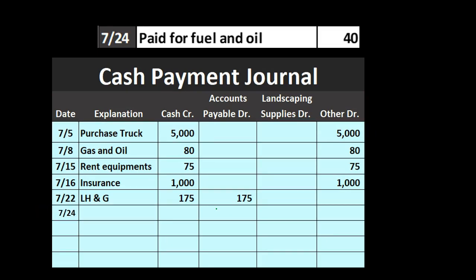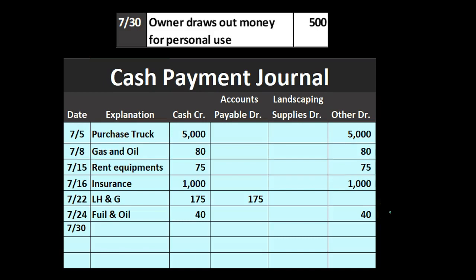On 7-24, we paid for fuel and oil — probably the same as gas and oil earlier — for $40. We put it into the 'other' category for expenses, breaking it out when we make the journal entry at the end. Then on 7-30, the owner draws out money for personal use: $500. We call that 'owner draws,' cash goes down, the other side goes to 'other.' Draws happen occasionally, perhaps once a month for owner withdrawals.